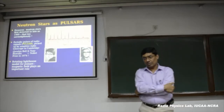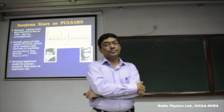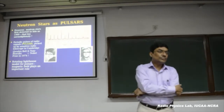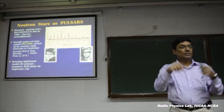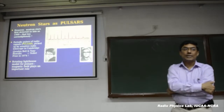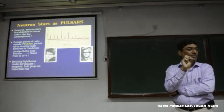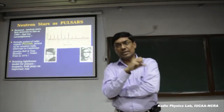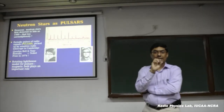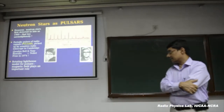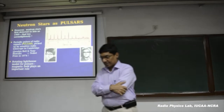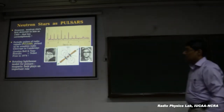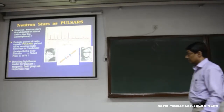It came down to what kind of source can produce such periodic pulsations. Various explanations were considered: rotating white dwarf, rotating neutron star, binary stars in orbit, or pulsating stars like RR Lyrae variables. All of these were looked at and ruled out. Finally, they said this has to be rotating neutron stars, and the closest approximation to that is what we call the lighthouse model.